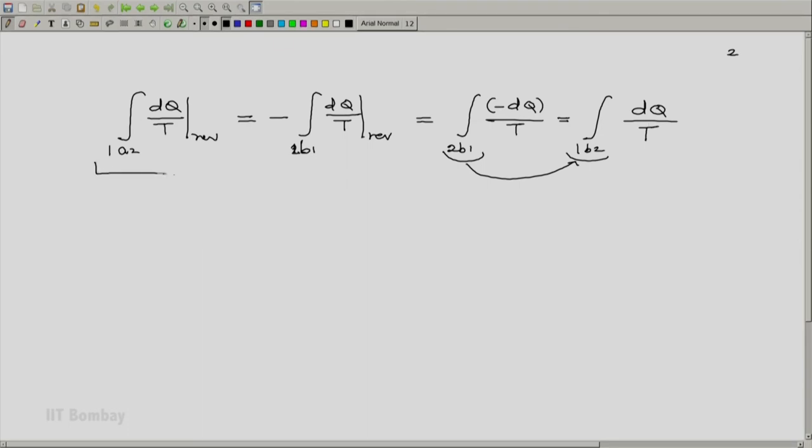Now compare the leftmost expression and the rightmost expression. Of course, everything here is reversible, I should never forget that. When you compare these two, you will come to the conclusion that dq by t reversible integral of this from 1 to 2 is independent of the path. And since now our cycle was any general cycle and hence the process 1 to 2 was any general process reversible, 1 to 2 were any 2 states.